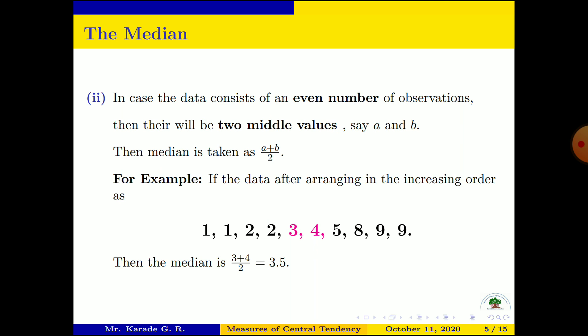So the median is the arithmetic mean, or simply the average, of these two middle values. For example, if the data after arranging in increasing order is: 1, 1, 2, 2, 3, 4, 5, 8, 9, 9 — there are two middle values, 3 and 4, denoted by pink color. The median is the average of 3 and 4, which is 3.5. Therefore the median of this raw data is 3.5.